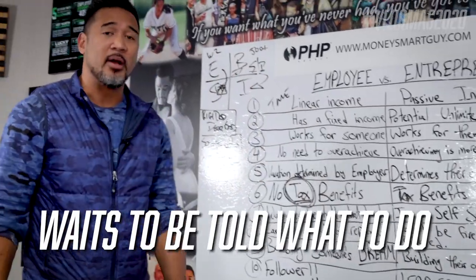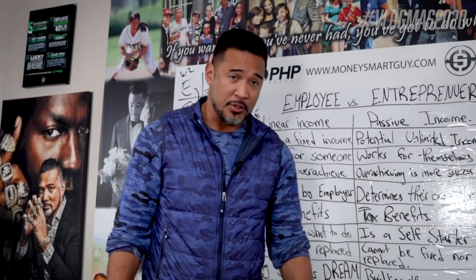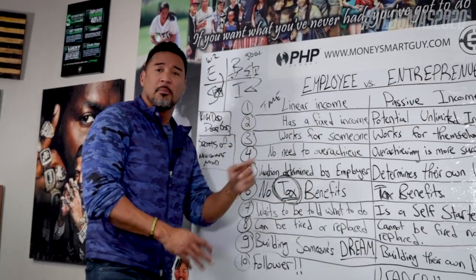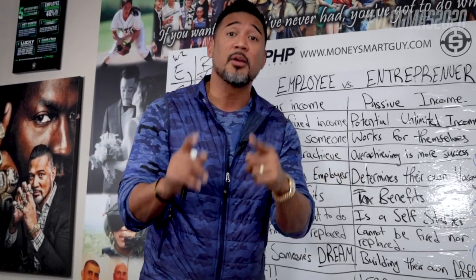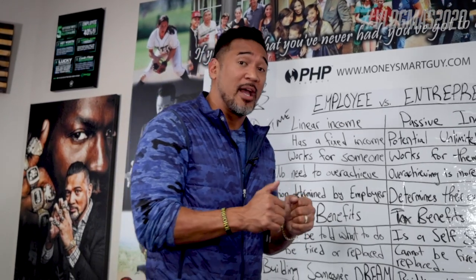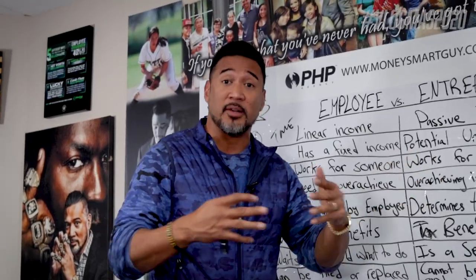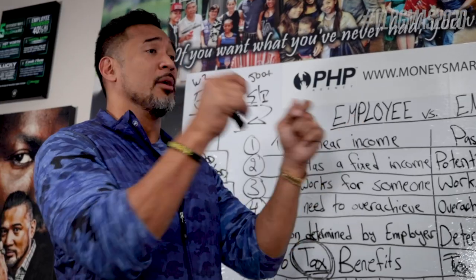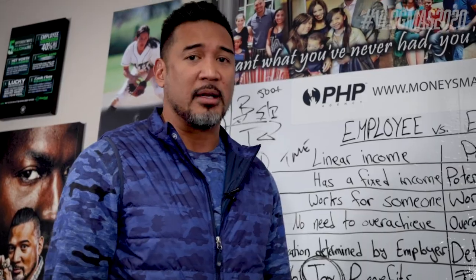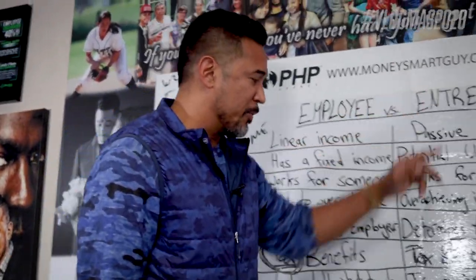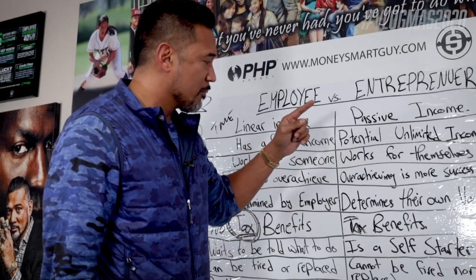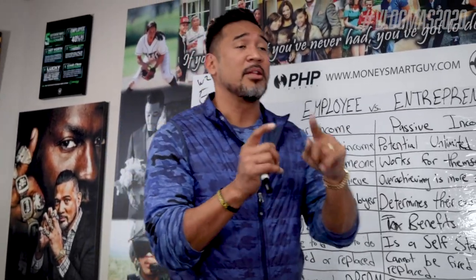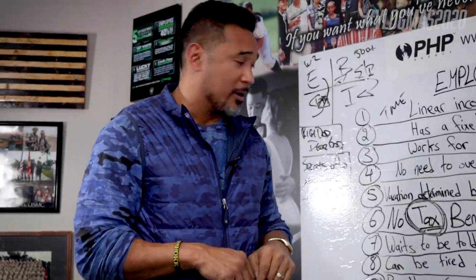Number seven: employees wait to be told what to do. They show up and ask, 'What now? What do I got to do?' There's no incentive for them to think like an intrapreneur unless the company builds that in. Most companies don't — clock in, clock out, waiting to be told what to do, being non-productive on the clock. However, an entrepreneur is a self-starter. I want to grow my enterprise. I'm not satisfied. I want to beat my last quarter, last three quarters, year over year. That's called being a self-starter.